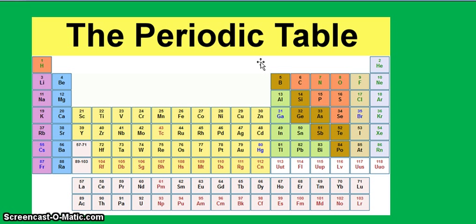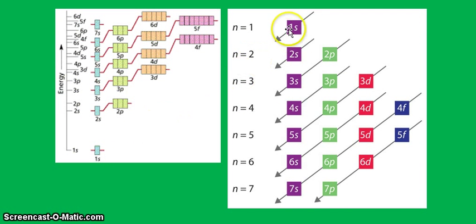So we'll see that when we do the distribution of our electrons. So we go to our energy levels. Remember that the S has the lowest energy, followed by the P, the D, and the F. And you go from 1s, 2s, 2p, 3s, 3p, 4s, 3d, and so on and so forth.